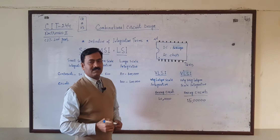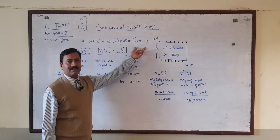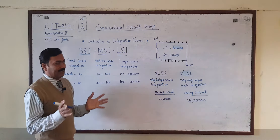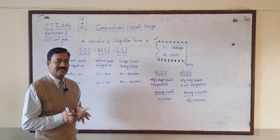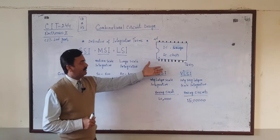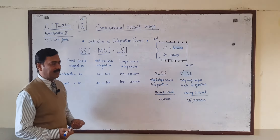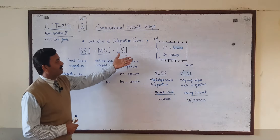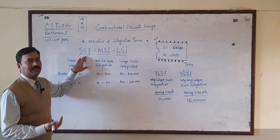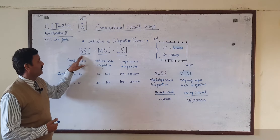In the beginning, when IC was made, we had a lot of work to build a package for IC. The first type of IC made was called SSI.